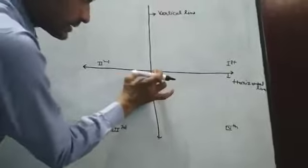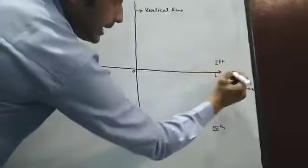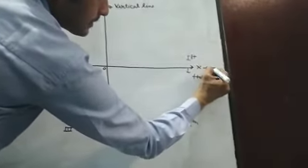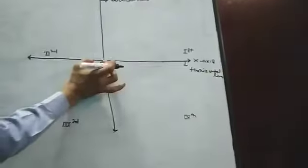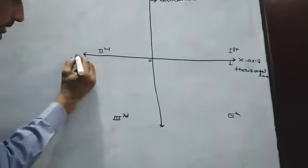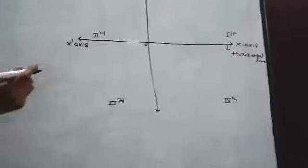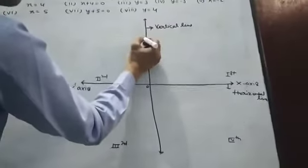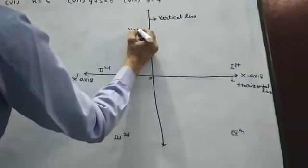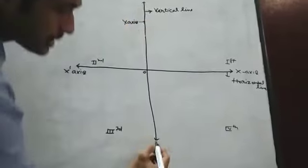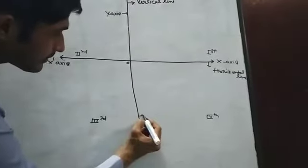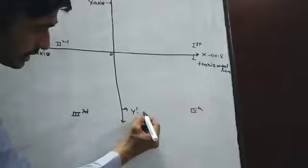Students now, this axis is called X-axis. On this side is students X-dash axis. Students, dash means negative. This is students Y-axis. And students, last one is this is Y-dash axis.